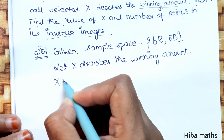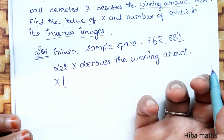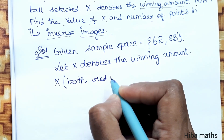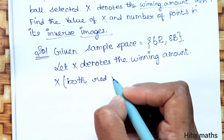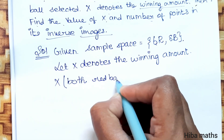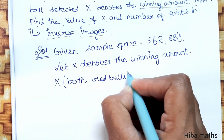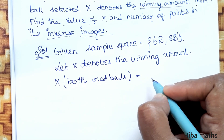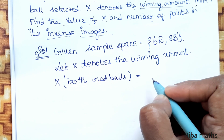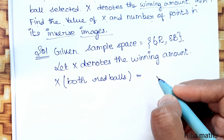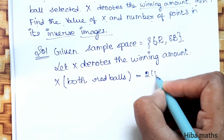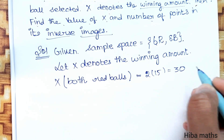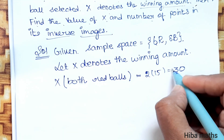First, we consider both red balls. For each red ball it's 15 rupees, so 2 red balls give 2 × 15 = 30 rupees. So x = 30.